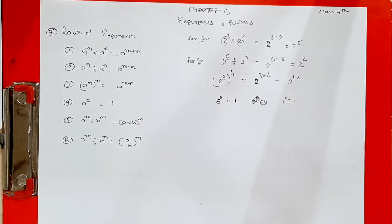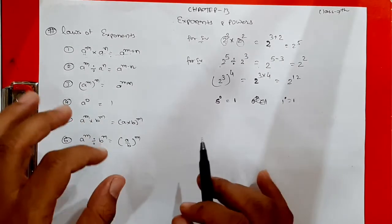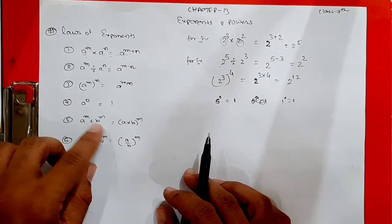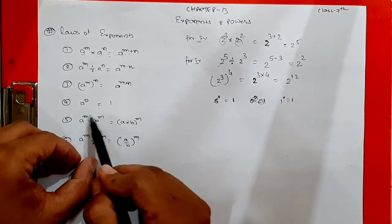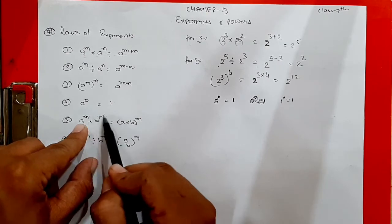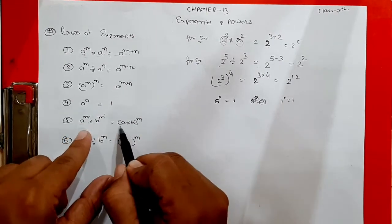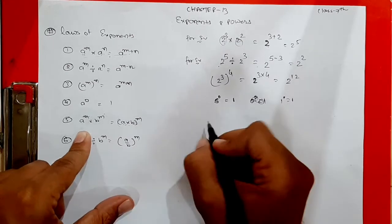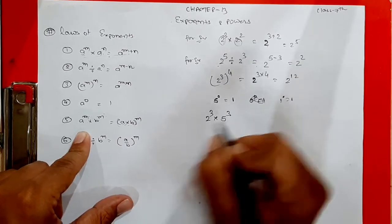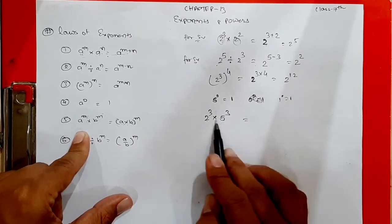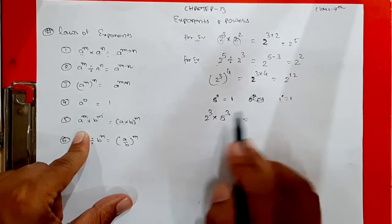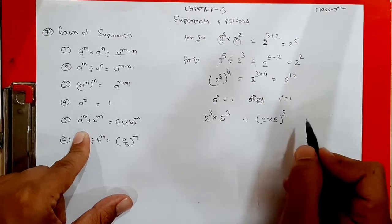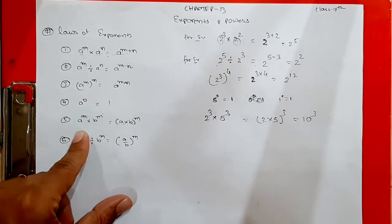The next rule — a raised to m multiplied by b raised to m: here the bases are different but the powers are the same. When the bases are different but powers are the same and there is a multiplication sign, we multiply the bases together and write the common power once. For example, 2 raised to 3 times 5 raised to 3 — different bases, same power — gives 10 raised to 3.